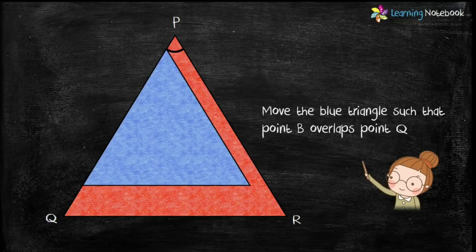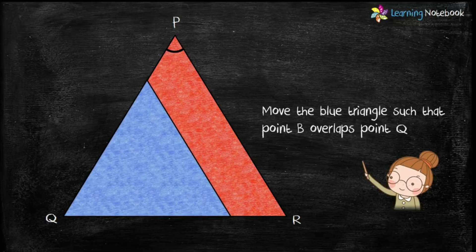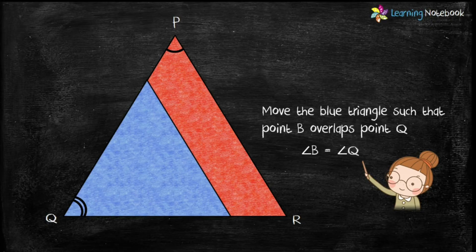Similarly, move the blue triangle such that point B overlaps point Q. So here also, we can say, angle B equals to angle Q.